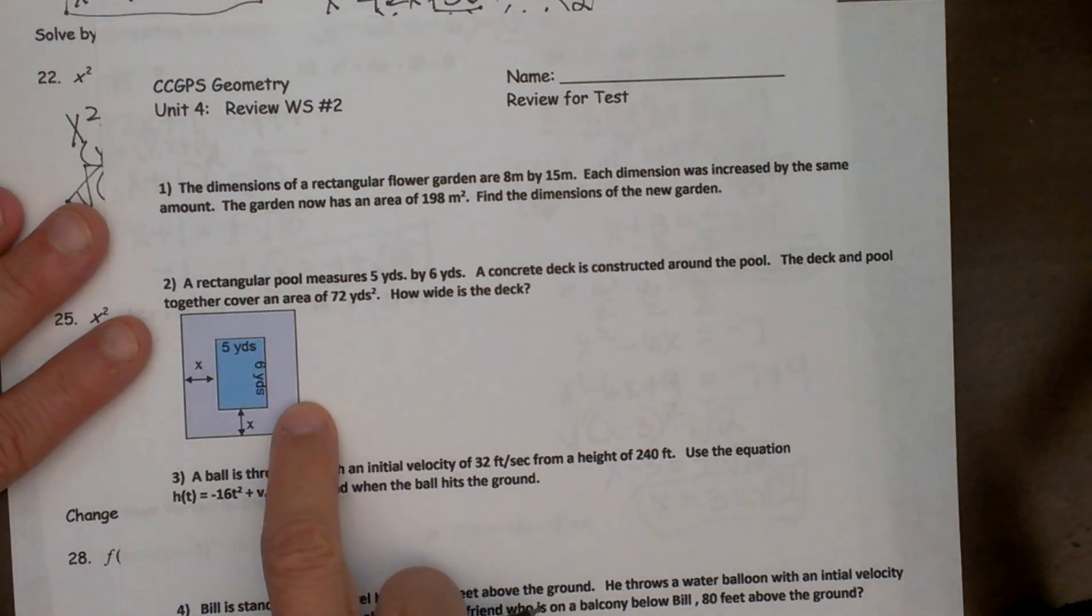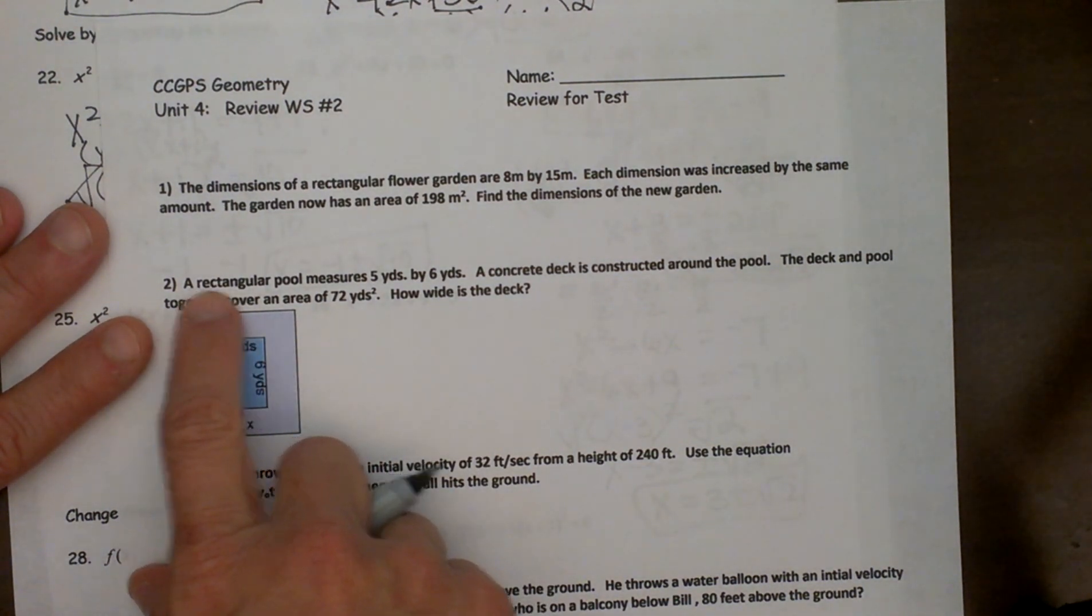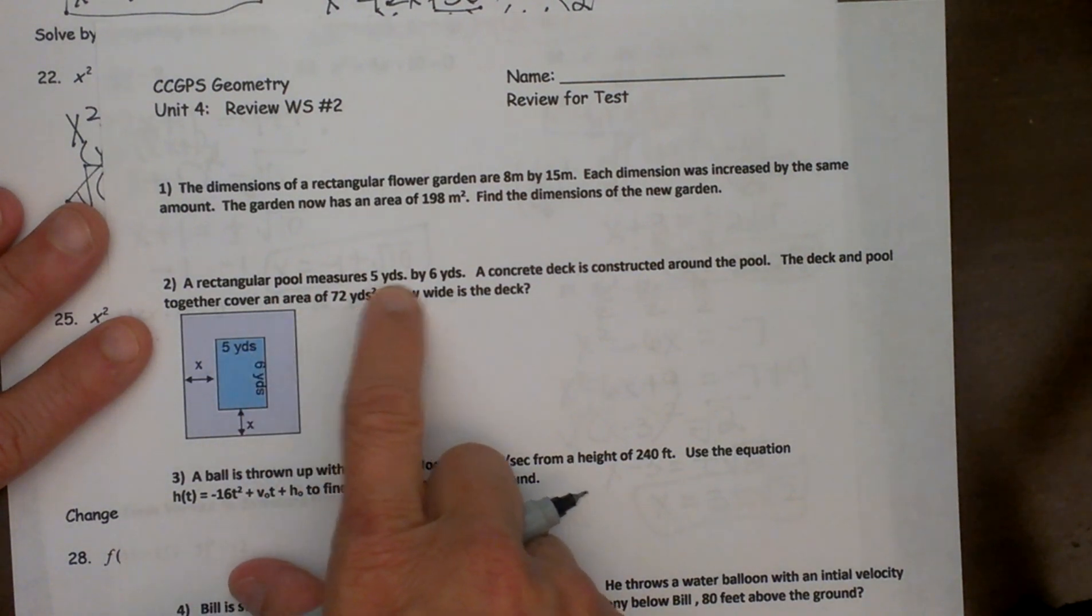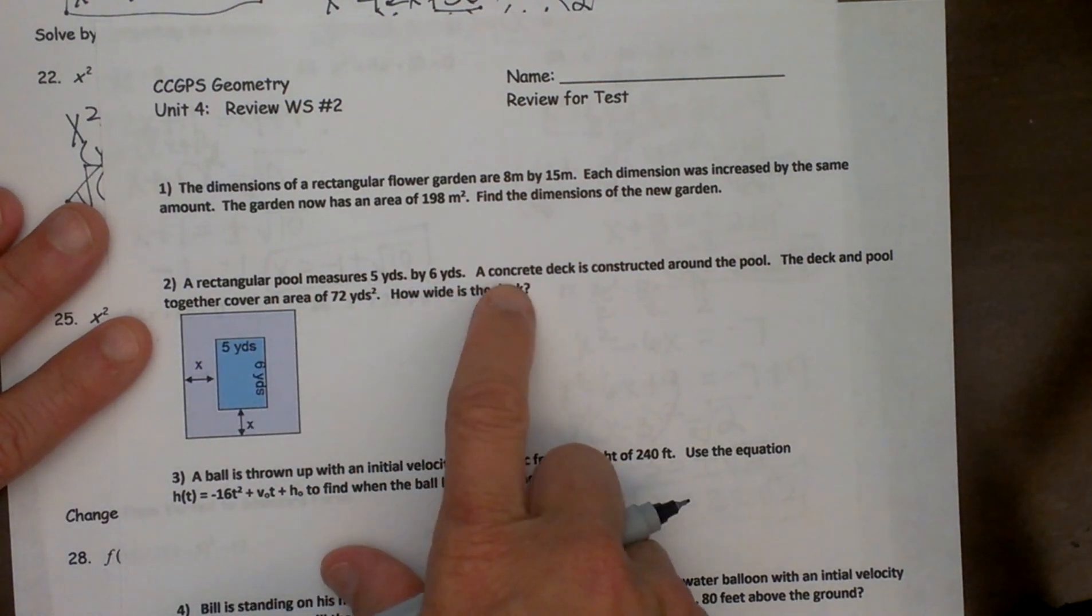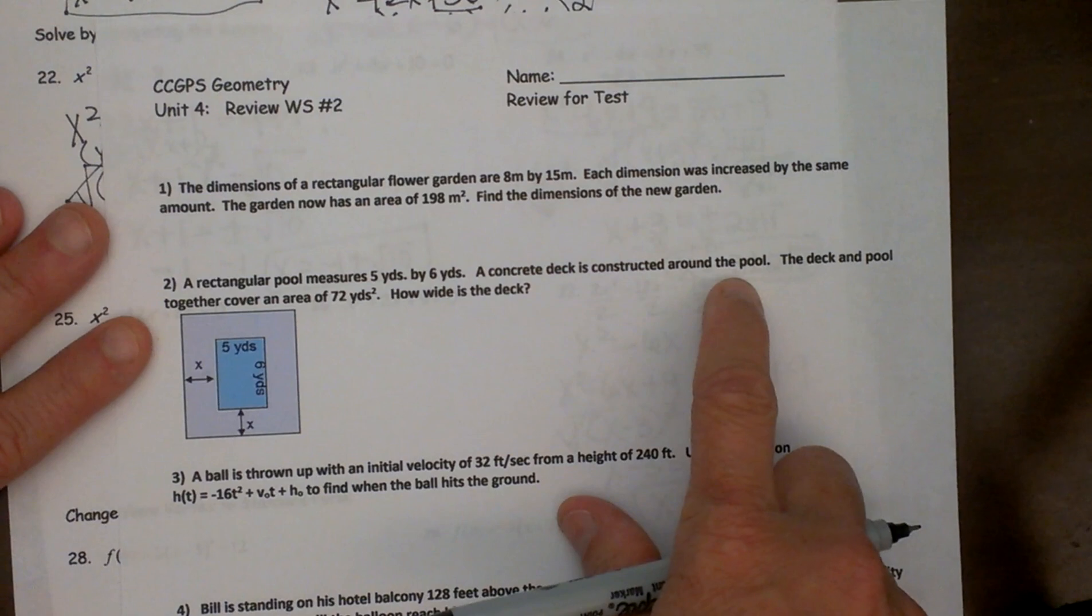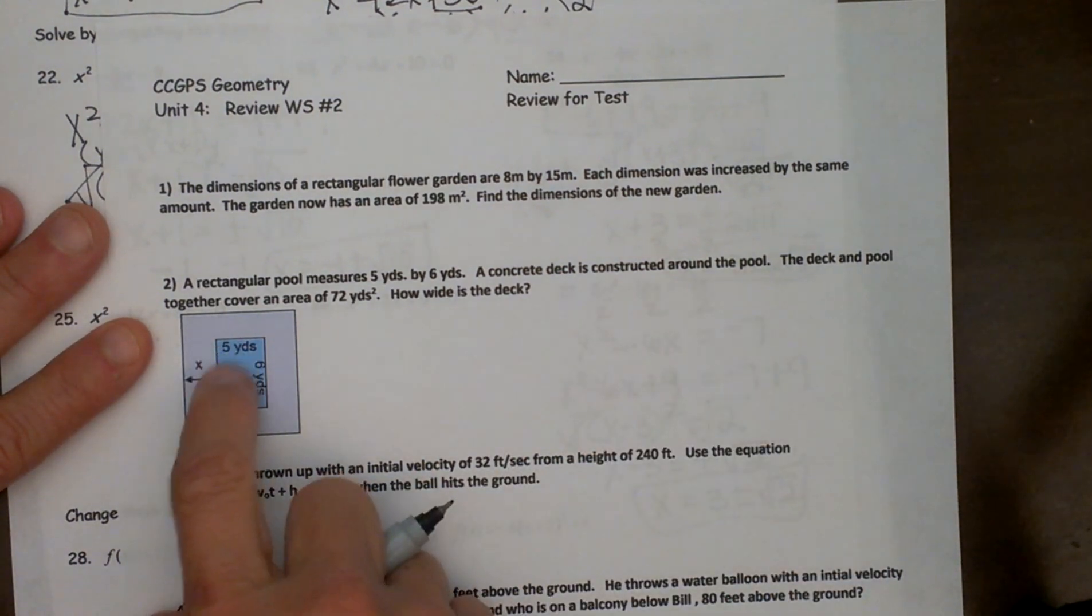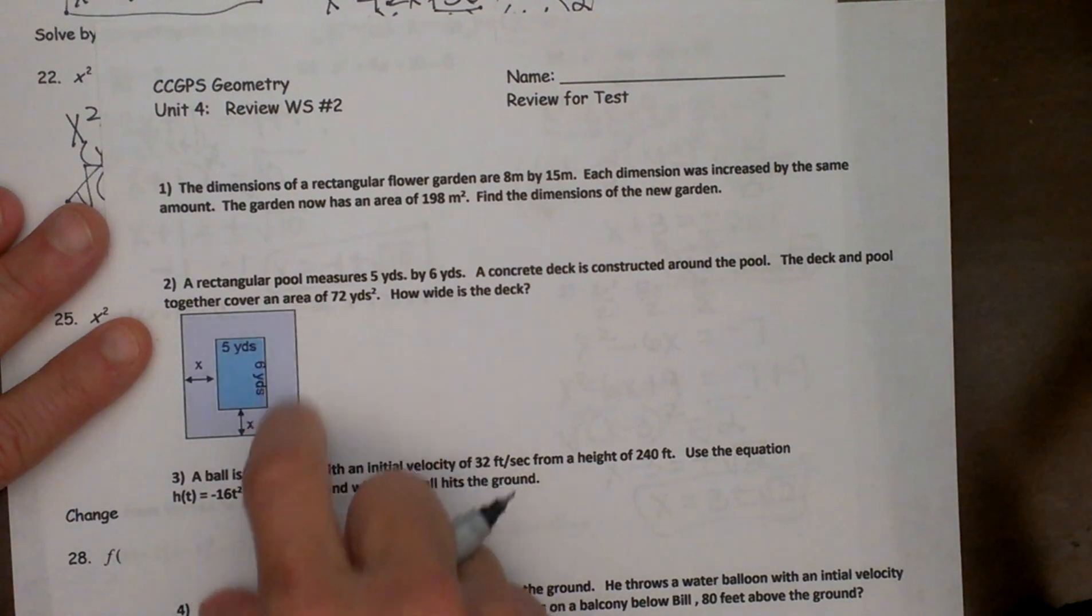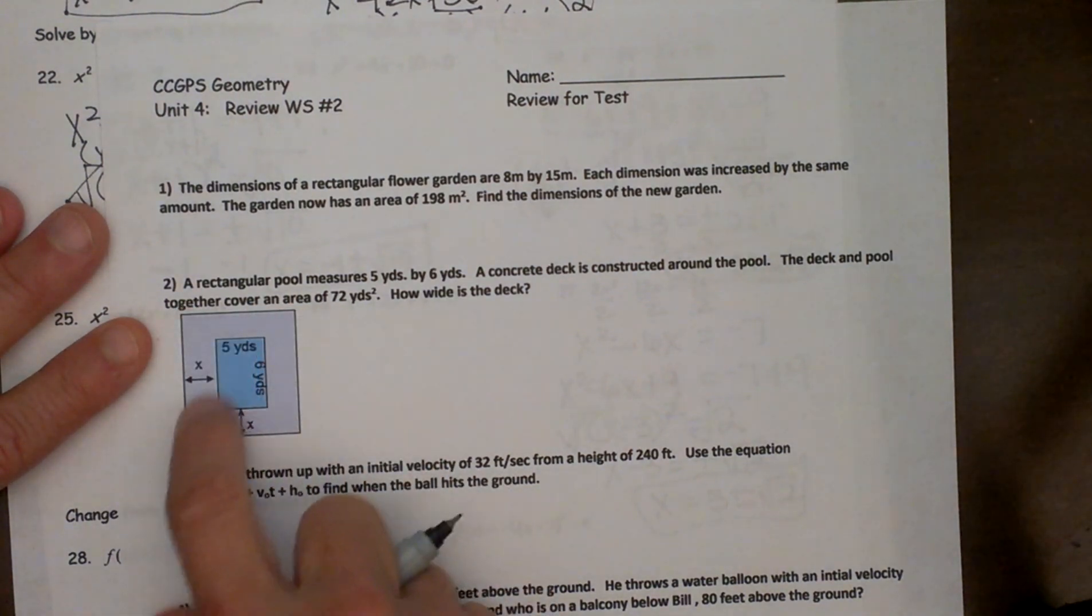Okay, number two is our big nemesis. So let's read through it. A rectangular pool measures five yards by six yards. A concrete deck is constructed around the pool. So here we have a picture, five by six is our pool and we have some concrete around the outside.